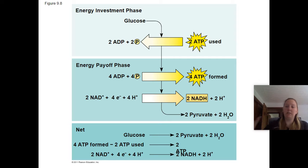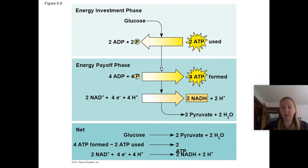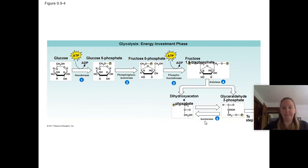So this is what is going on. Glucose comes in; two molecules of ATP are used to split the glucose in the energy investment phase. In the energy payoff phase we get four ATP, but since we used two, we only gained two net. At the end, we have two molecules of pyruvate.